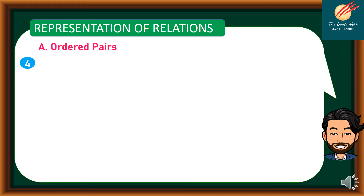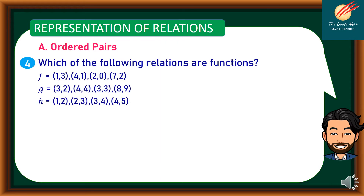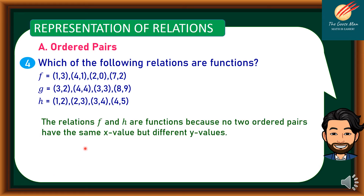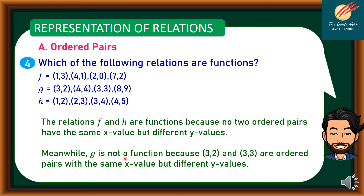Let's move on to representation of relations using ordered pairs. Which of the following relations are functions? We have f = {(1,3), (4,1), (2,0), (7,2)}, g = {(3,2), (4,4), (3,3), (8,9)}, and h = {(1,2), (2,3), (3,4), (4,5)}. The relations f and h are functions because no ordered pairs share the same x value with different y values. However, g is not a function because the pairs (3,2) and (3,3) have the same x value but different y values.